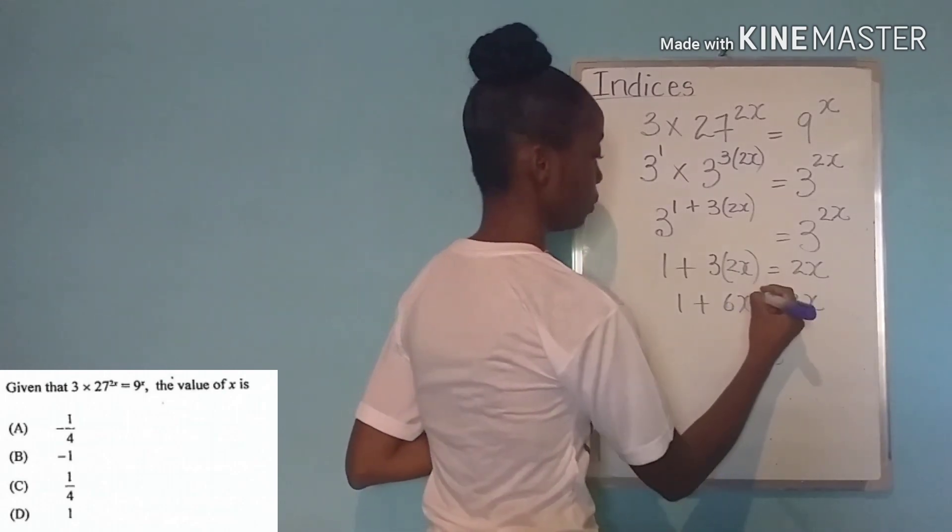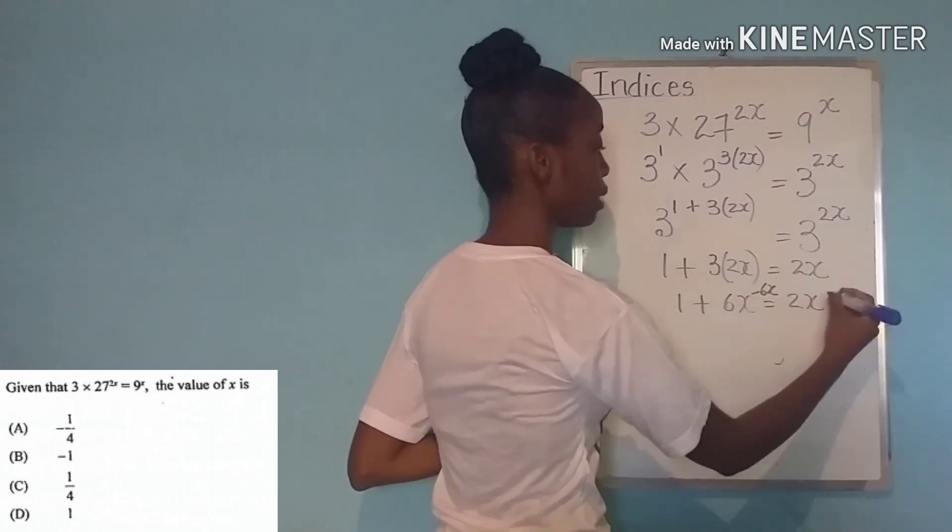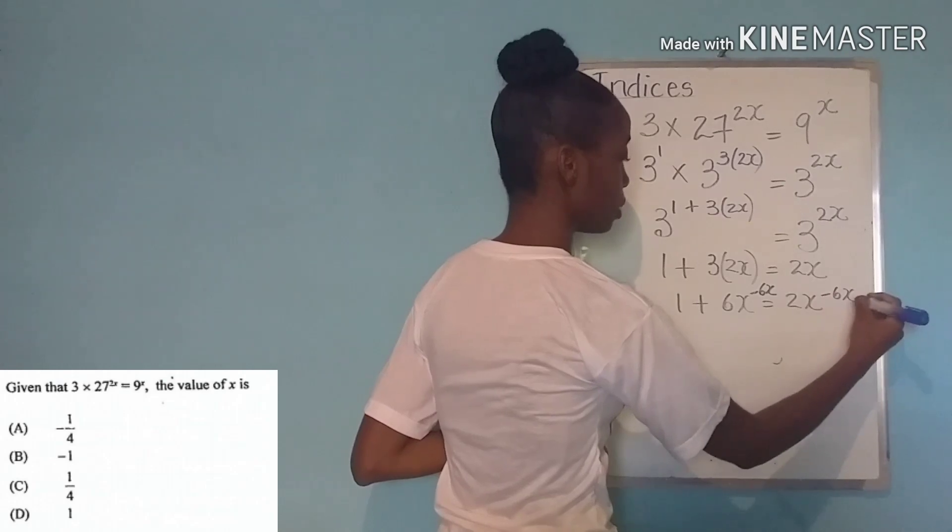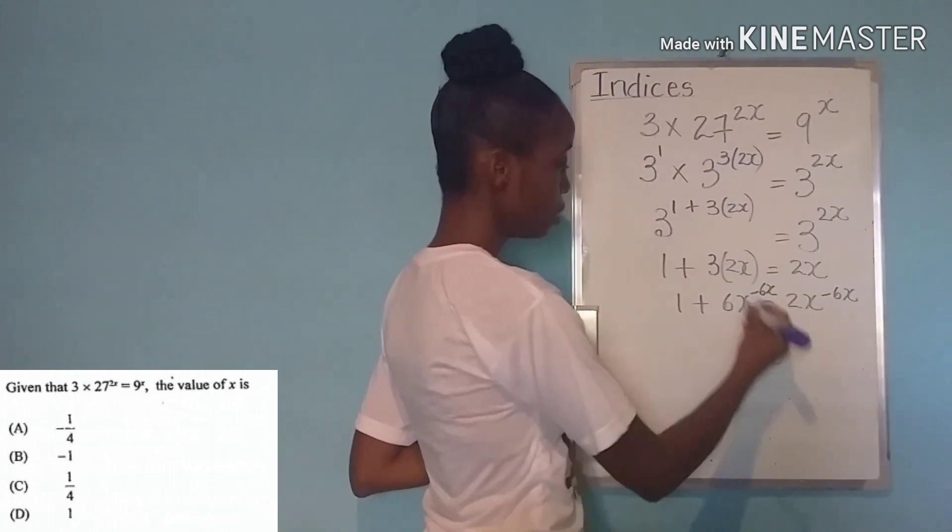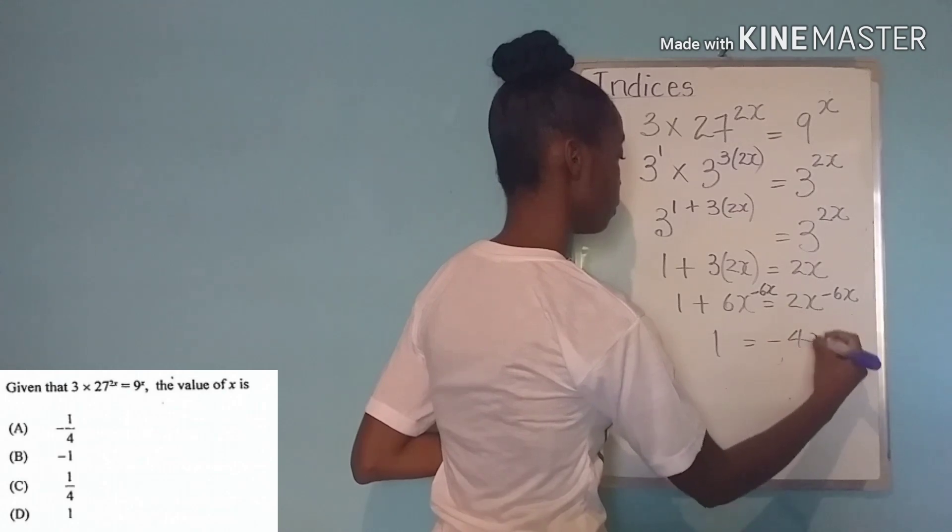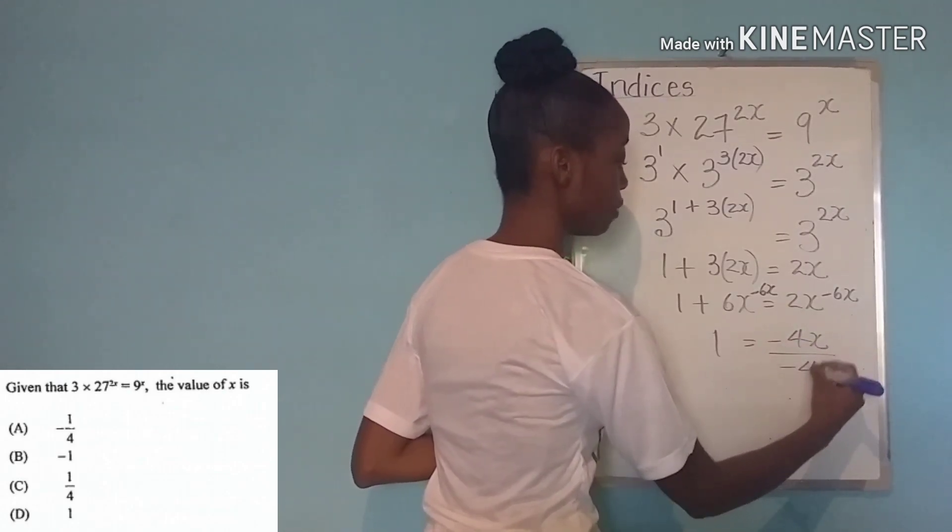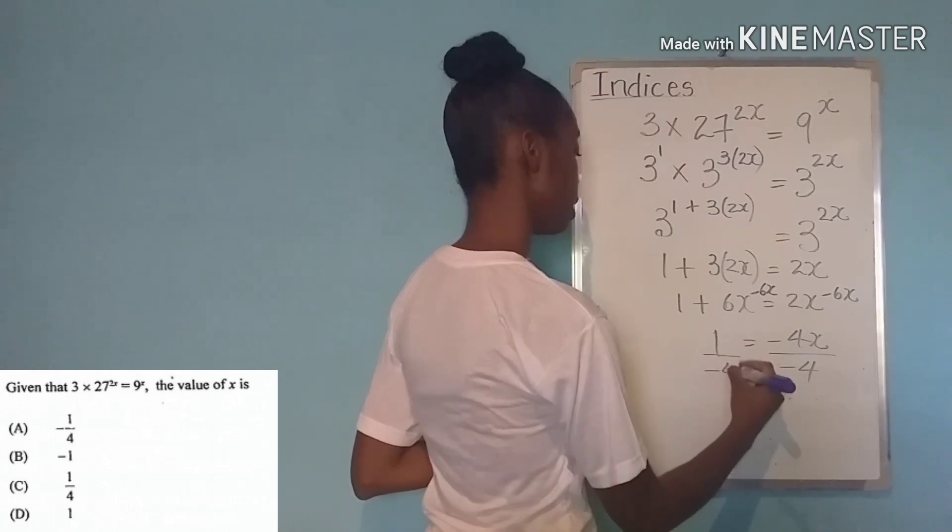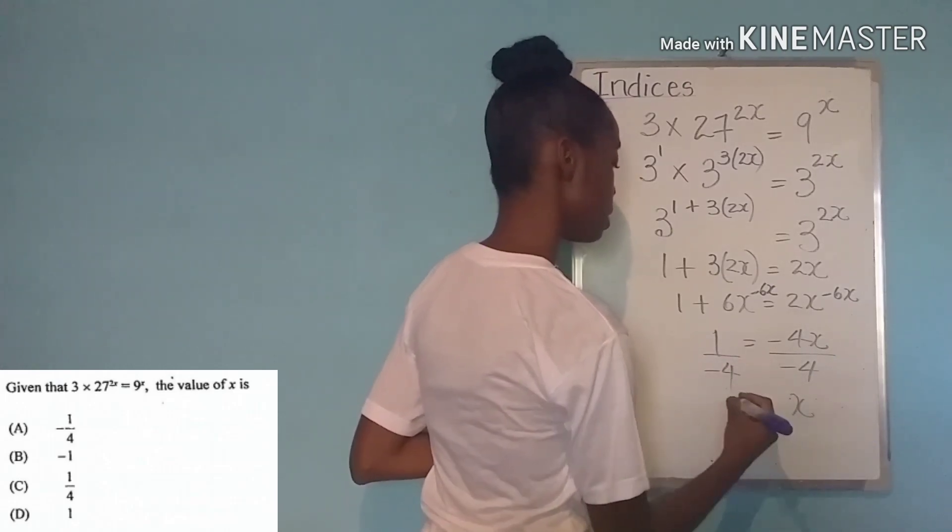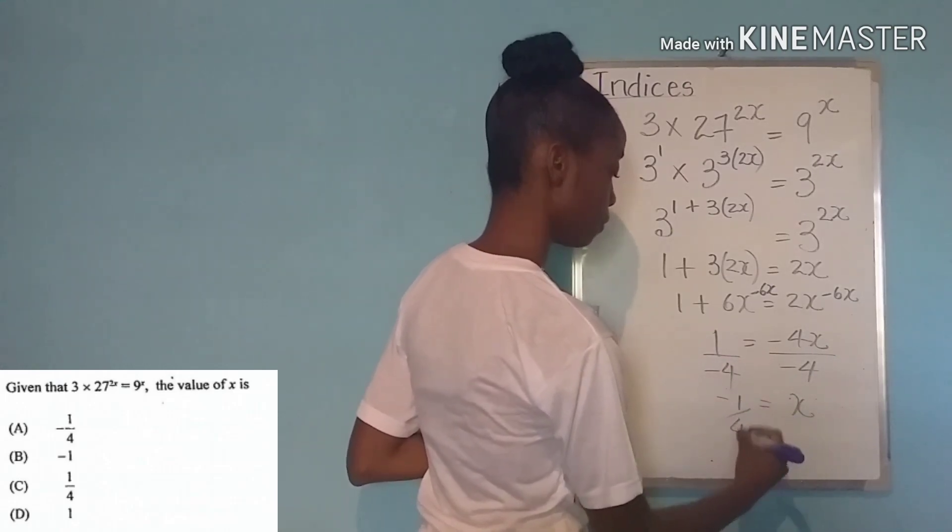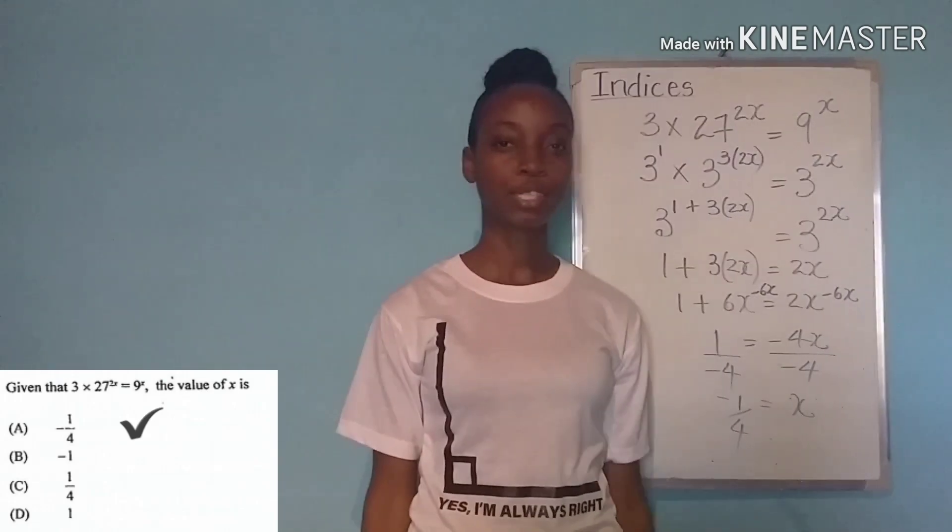So let's subtract 6x from this side. And if we do that on one side then we must do it on the other. So now we have 1 equals negative 4x. We're solving for x. We get rid of this negative 4 by dividing both sides by negative 4. x is equal to negative a quarter. That's two done.